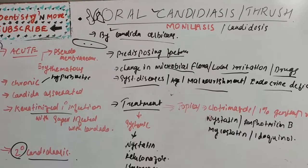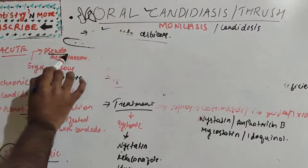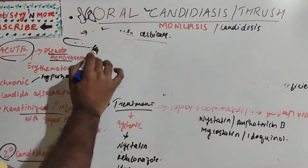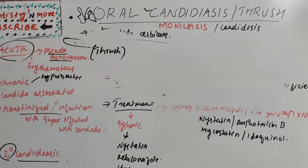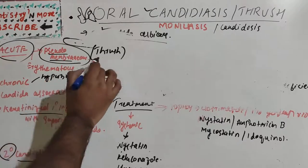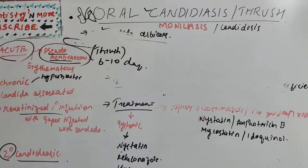Endocrine deficiency — due to hypoparathyroidism, hypothyroidism, or Addison's disease — is another predisposing factor. Pseudomembranous candidiasis, which comes under the acute classification, is also known as thrush. It is a superficial infection of the upper layer of the oral mucous membrane. There is desquamation of epithelial cells and accumulation of bacteria, keratin, and necrotic tissue, forming a pseudomembrane. In infants, it occurs between 6 to 10 days after birth, with infection from the maternal vaginal canal.